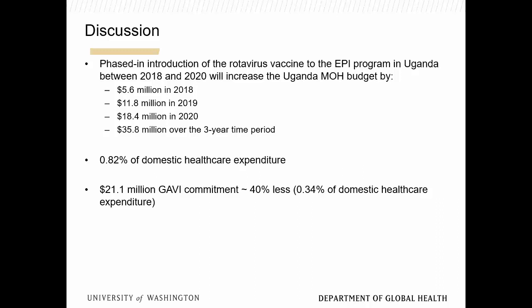This domestic figure covers only Ministry of Health spending, not all healthcare expenditure. GAVI at the time had committed just $20 million — 40% less than what our model projected the full program would cost, given our assumptions. So the key policy question was: what does GAVI think about this, and would they consider increasing their commitments?